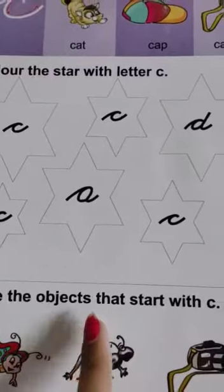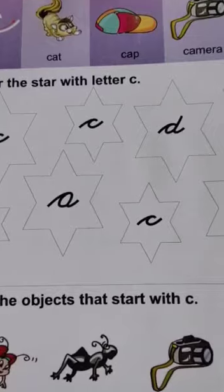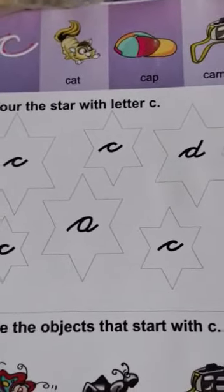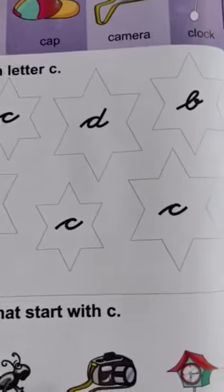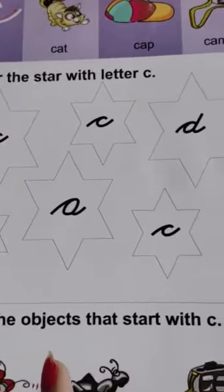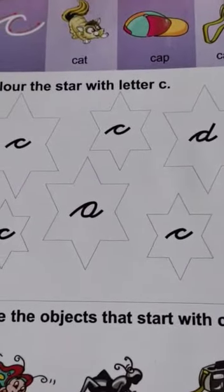And now you need to circle the objects that start with C. There are many objects that start from C. If they start from C, you have to circle them. And the other stars that have the letter C, you have to circle those.